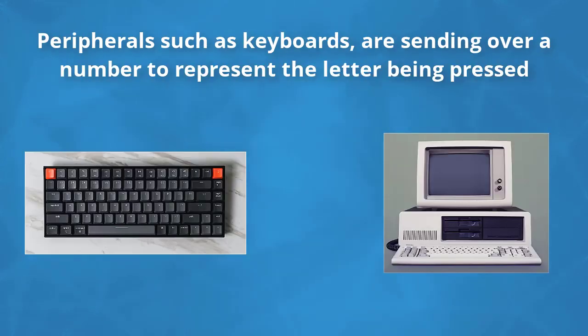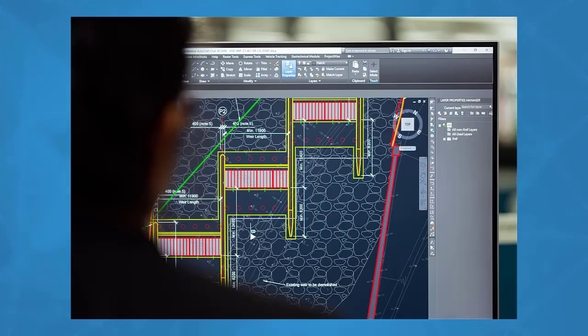When we type on a keyboard, the data being sent over through the wire isn't the letter K or the letter C for example, rather it is sending over a number which represents that letter, and then the computer can recognize it.